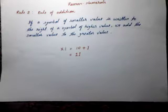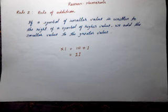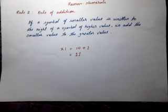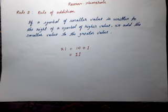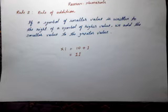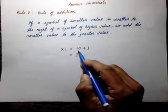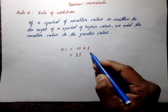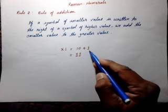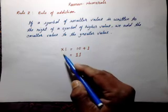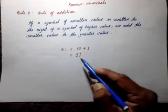Now let us look at the second rule of addition. If a symbol of smaller value is written to the right of a symbol of higher value, we add the smaller value to the greater value. For example, consider XI. X has a value of 10 and I has the value of 1, so the Hindu-Arabic number for this Roman numeral is 11.